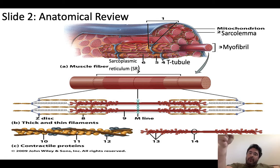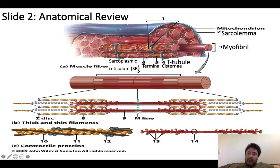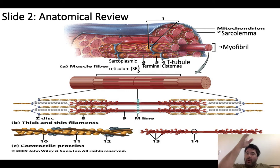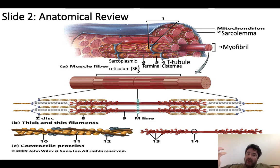The sacs that surround each myofibril are called the sarcoplasmic reticulum. Whereas T-tubules allow the electrical signal to spread from the outside to the inside of the cell, the sarcoplasmic reticulum and the terminal cisternae — which is just the end of the sarcoplasmic reticulum that butts up against the T-tubule — store and release calcium. When an action potential travels down the T-tubule, that triggers the terminal cisternae of the sarcoplasmic reticulum to release calcium. Calcium is absolutely necessary for muscle contraction, cardiac or skeletal — you cannot have cardiac muscle contraction without it.